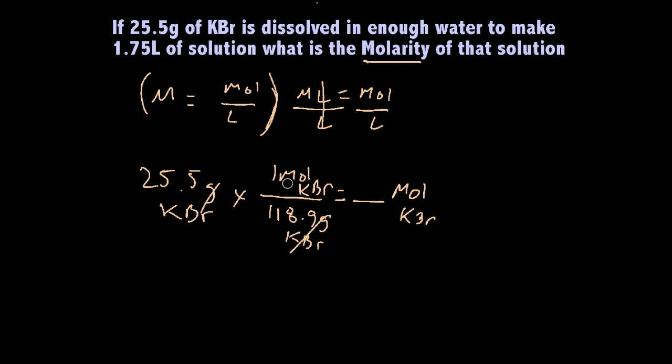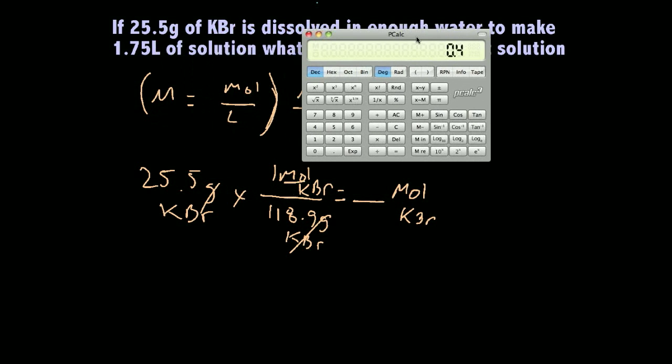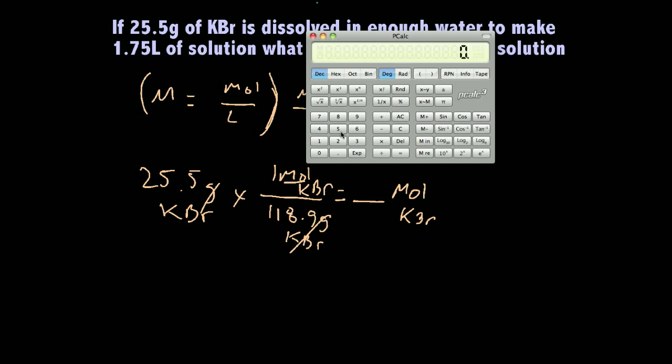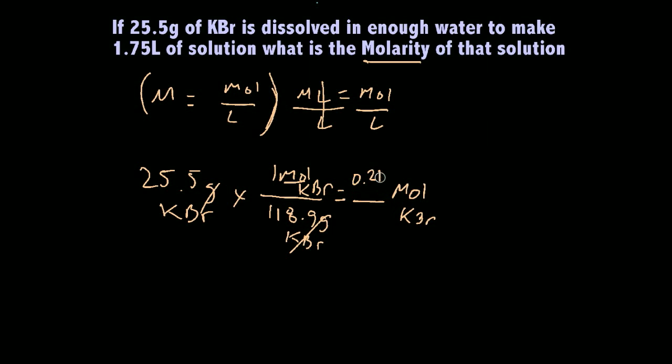So just grab the calculator again. So we've got 25.5 times 1 divided by 118.9. So that's 0.214 moles. So now we just have to divide this 0.214 moles divided by our liters, which is 1.75 liters. And I'll rewrite this so you can clearly see what I'm talking about. We've got 0.214 moles of KBr over, divided by liters from our word problem here, 1.75 liters.